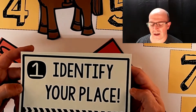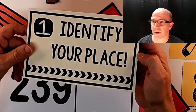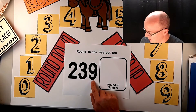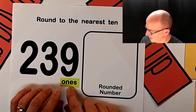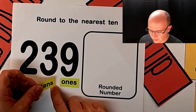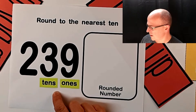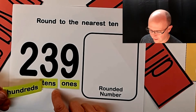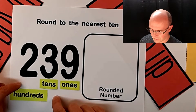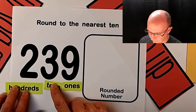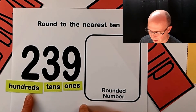Step one says identify your place. We're going to go to what we know about place value. We know that this is the ones place, or the ones digit. We know that this is our tens place. And over here, this is our hundreds place. Ones. Tens. Hundreds.